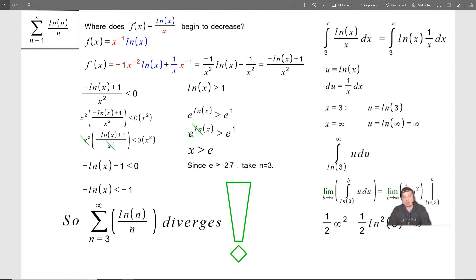And to integrate with the power rule, basically, so it becomes 1 half u squared. And then here it's b, and then ln of 3 on the bottom.